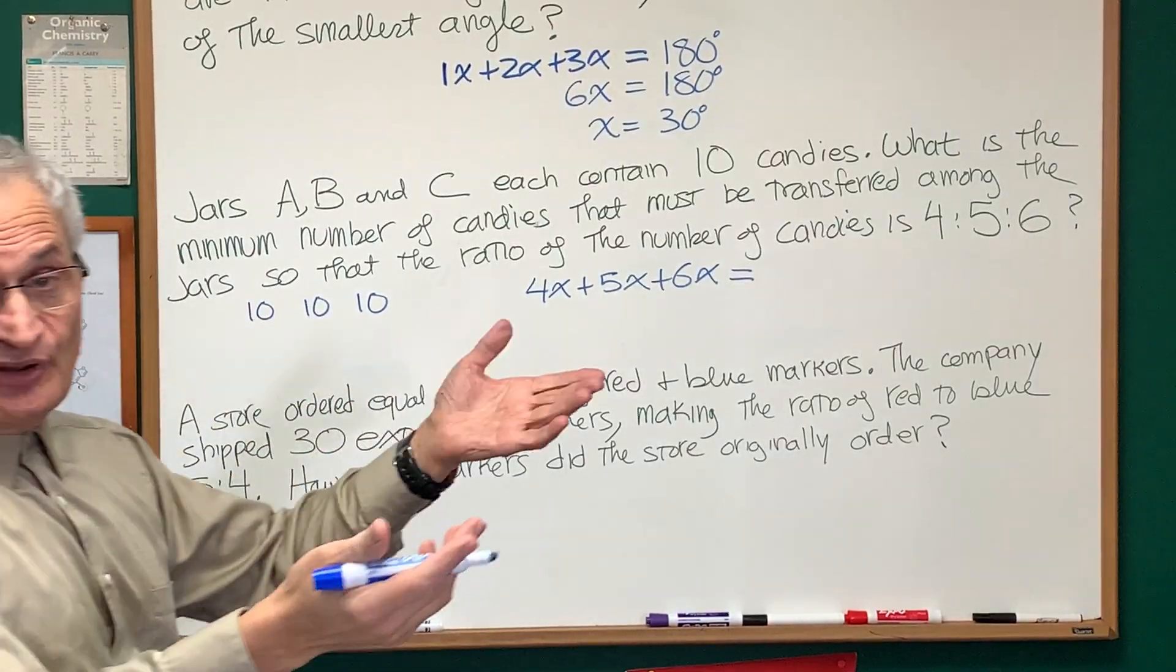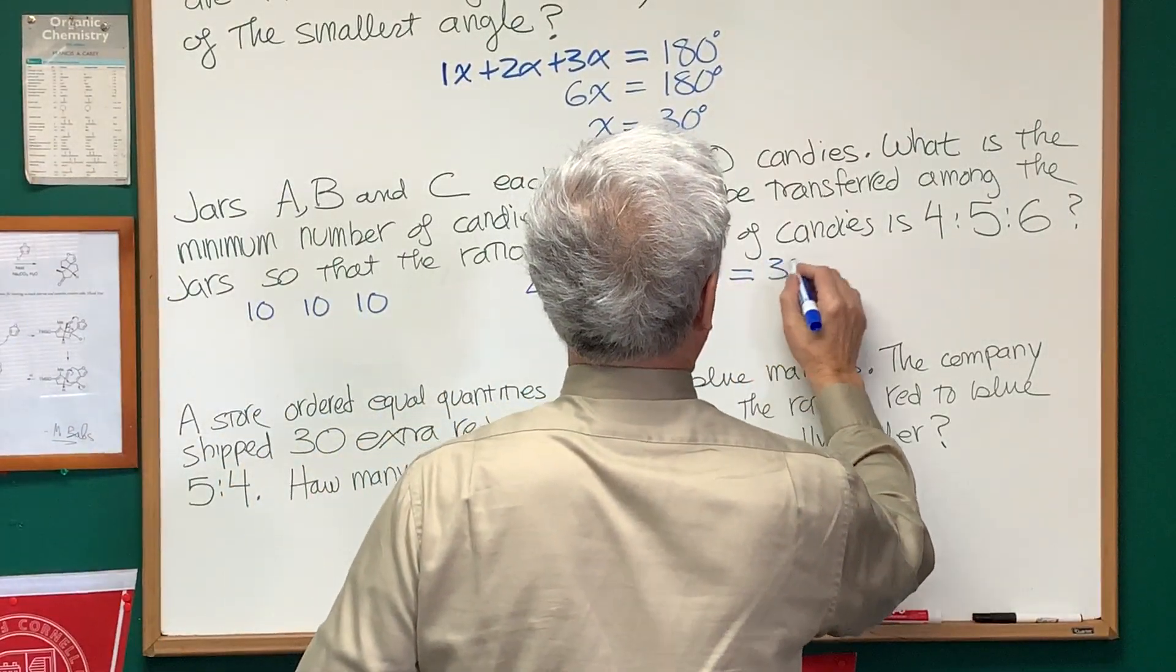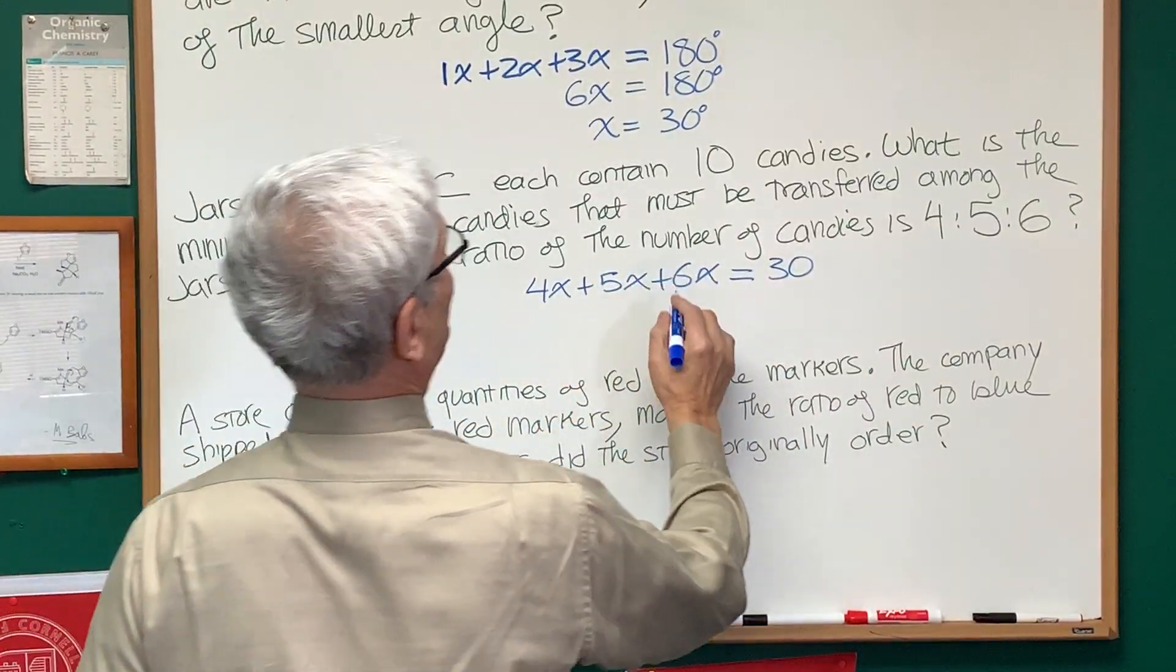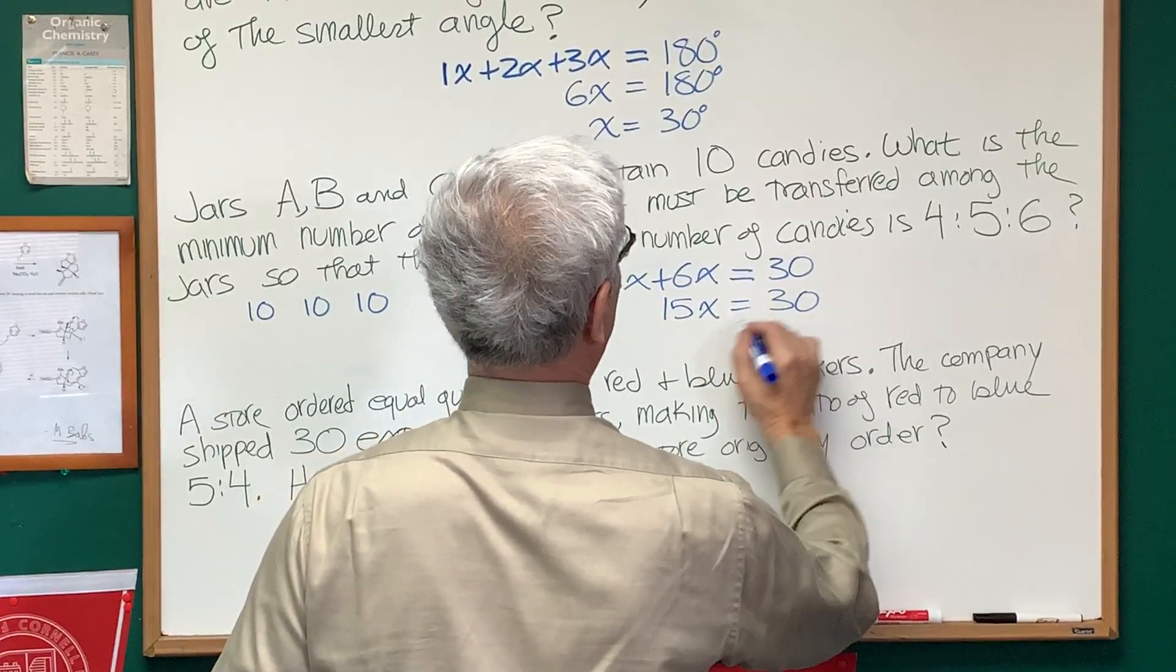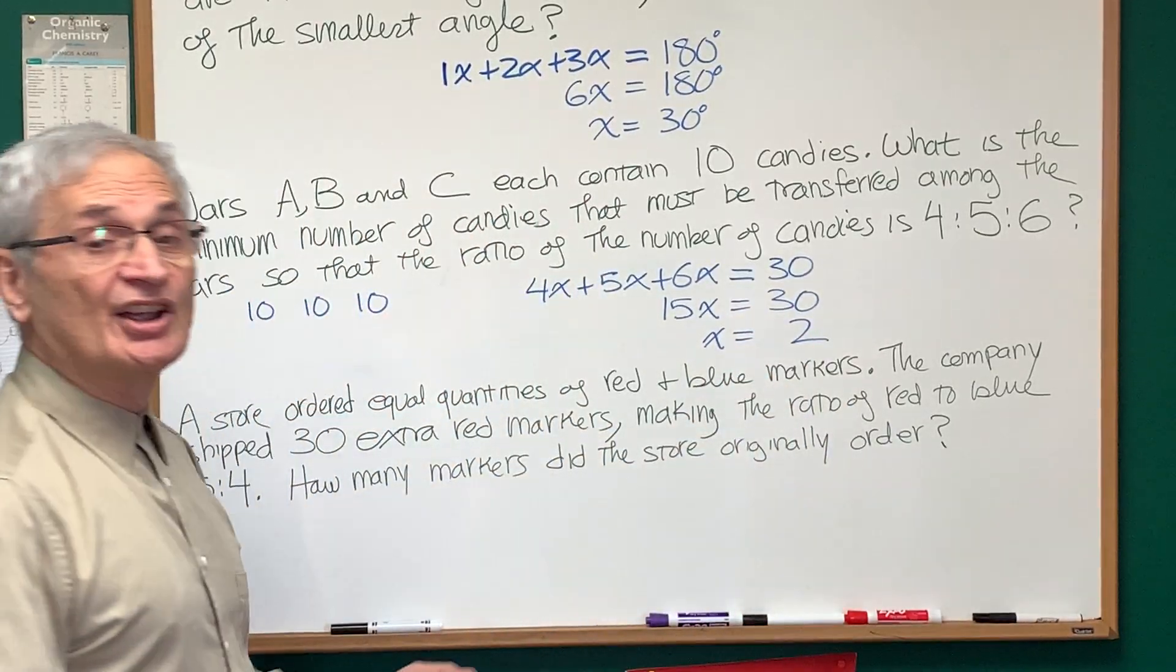10, 20, 30. Okay, and let's solve for x. 5 plus 4 is 9, plus 6 is 15. 15x equals 30. x is equal to 2.